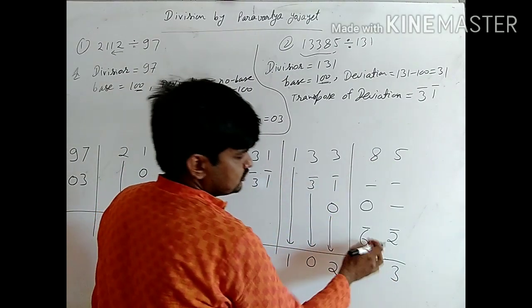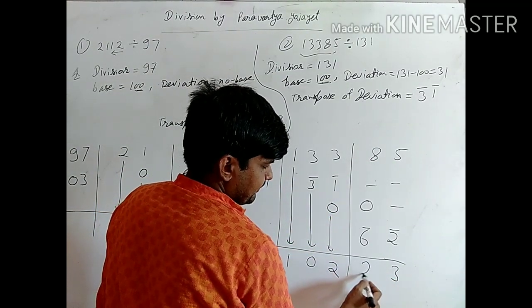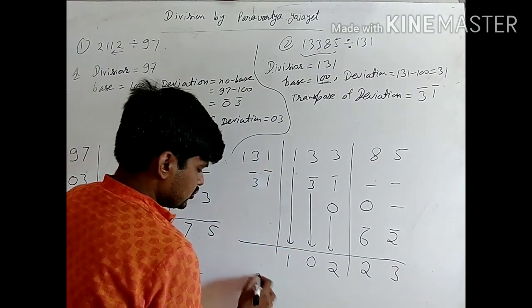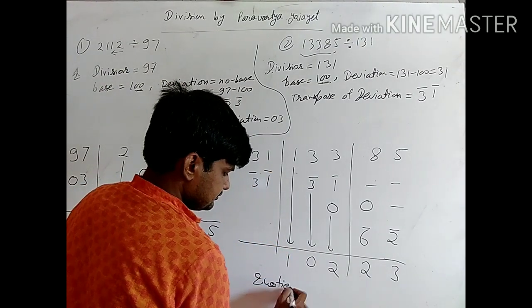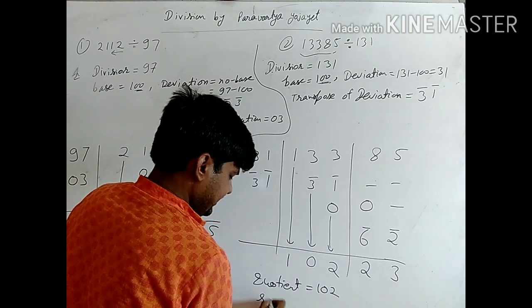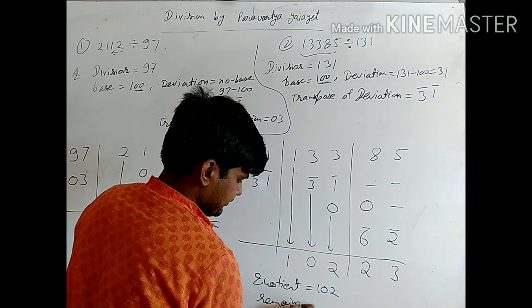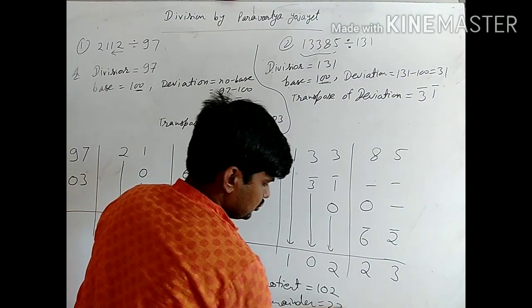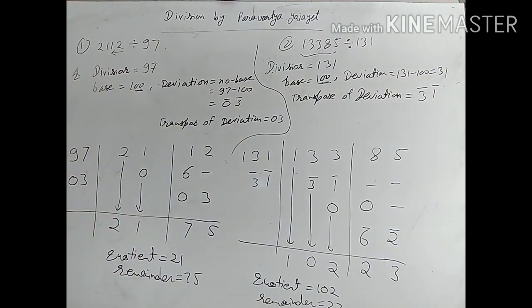Now 8 positive, 6 minus, we get plus 2. So our quotient is 102 and remainder is 23. This is our Paravartya Yojayet method which can be used to perform the division.